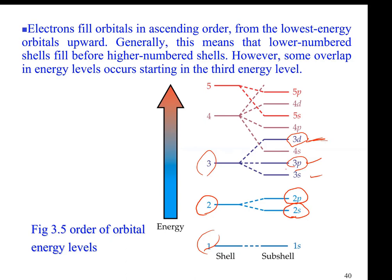But how come 4s, which belongs to the fourth shell, has less energy than 3d? That is because of the effects of the shape of the electron clouds. It's not only the main energy shell which determines the energy — it's also the type of orbital.